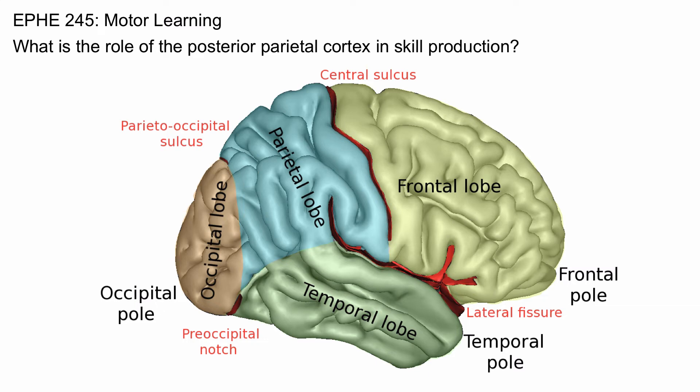Other parts of the parietal lobe integrate sensory information. These are the parietal association areas — they take all of the information from the primary sensory cortex and integrate it, so you have a representation of your body in space.